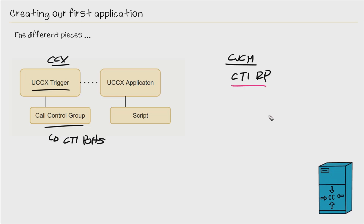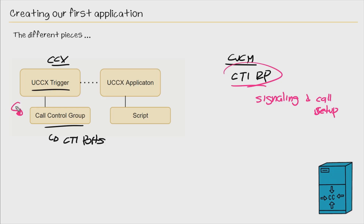The CTI route point's sole job is to deliver the signaling and the call setup to Contact Center Express. That is the job of the CTI route point, or the trigger — trigger and CTI route point mean the same thing. So once the trigger has been found, it looks at its call control group, which contains CTI ports.